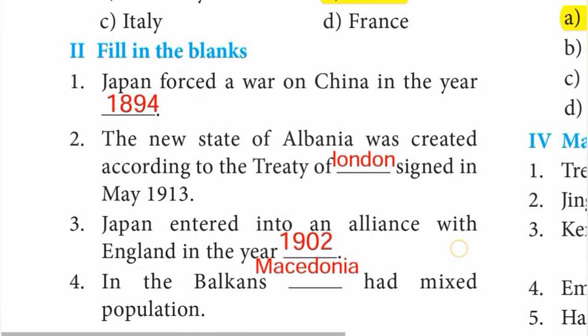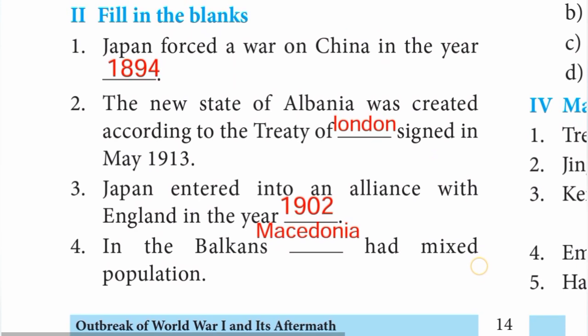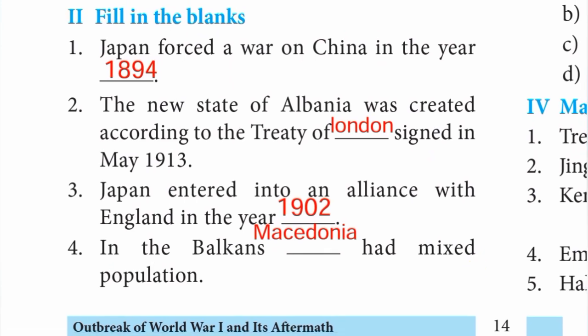Second: the new state of Albania was created according to the Treaty of London signed in May 1913 — answer is Treaty of London. Third one: Japan entered into an alliance with England in the year 1902.